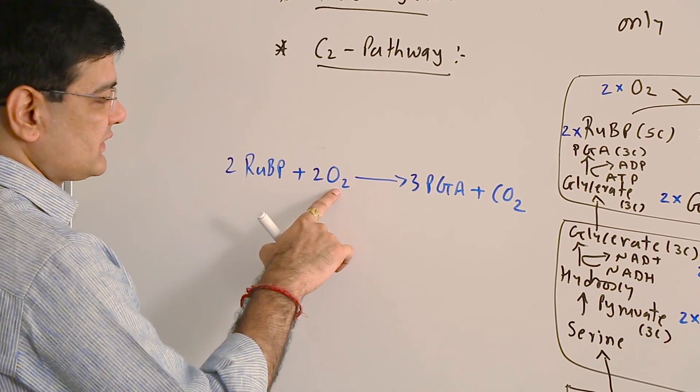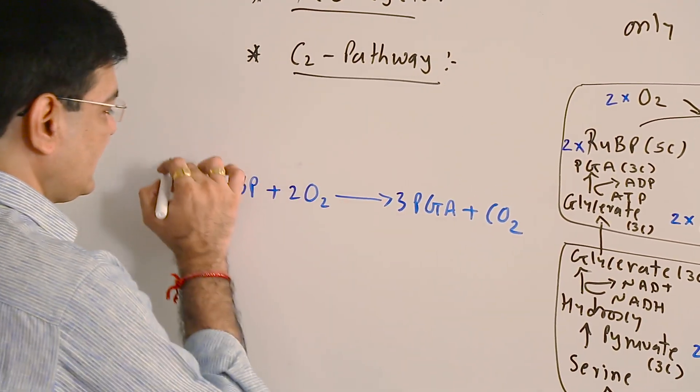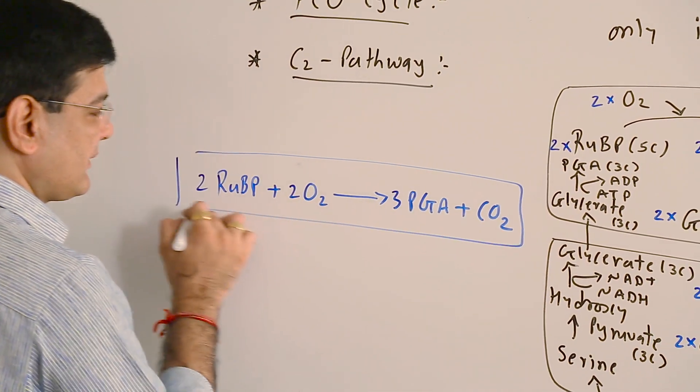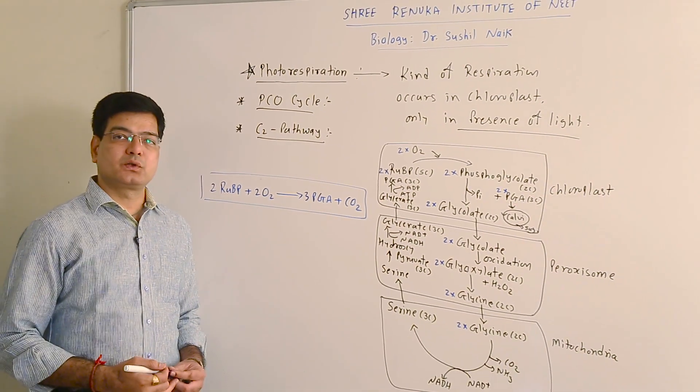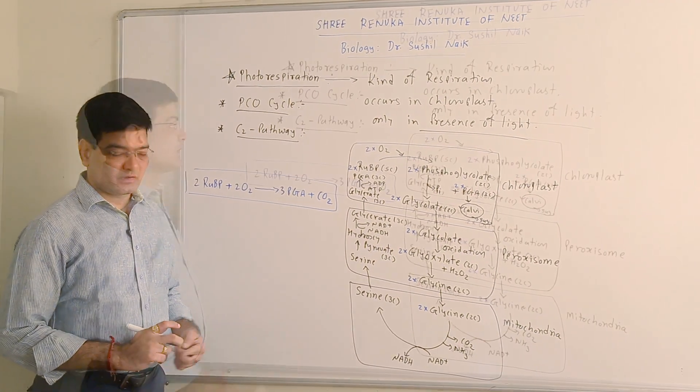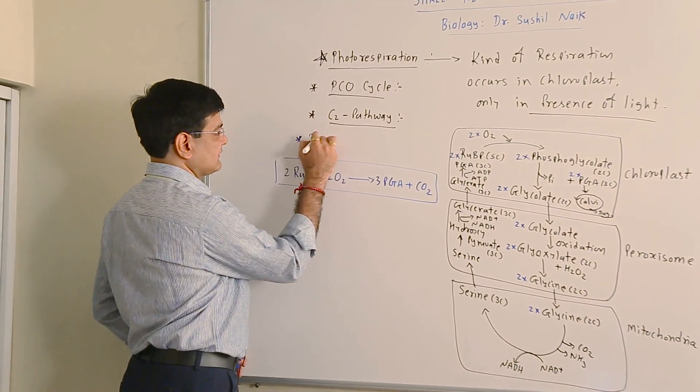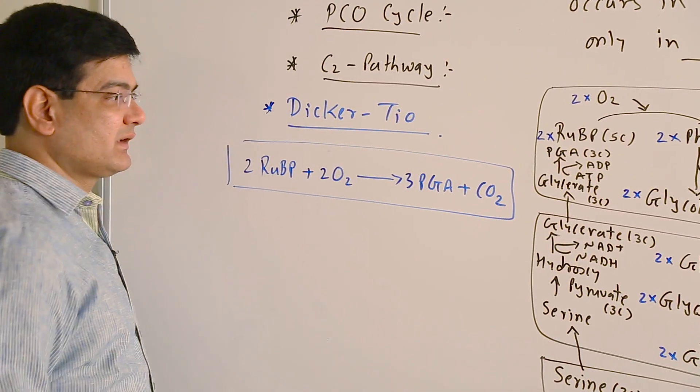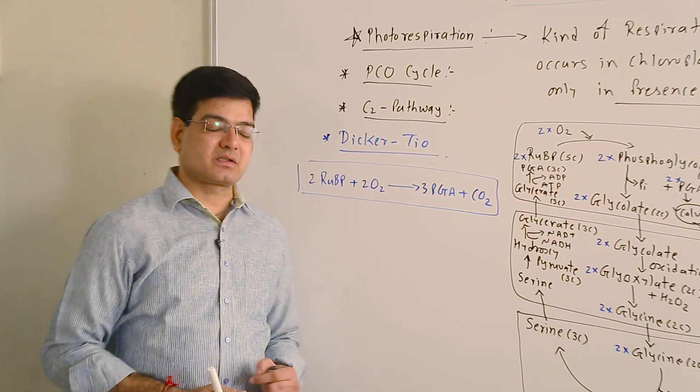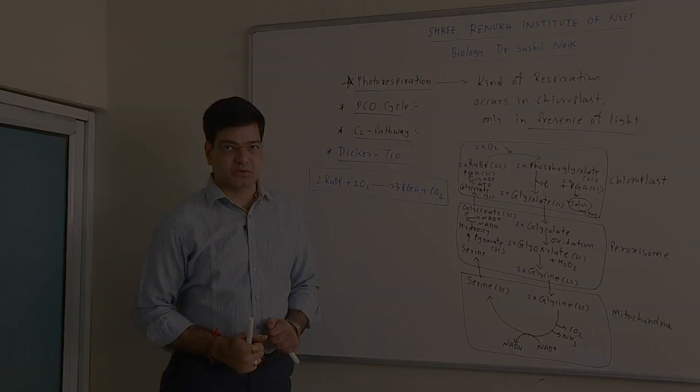So 2 RuBP plus 2 oxygen gives 3 PGA and 1 carbon dioxide, and this is the complete equation of photorespiration. Scientists Decker and Tio explained this entire process of photorespiration.